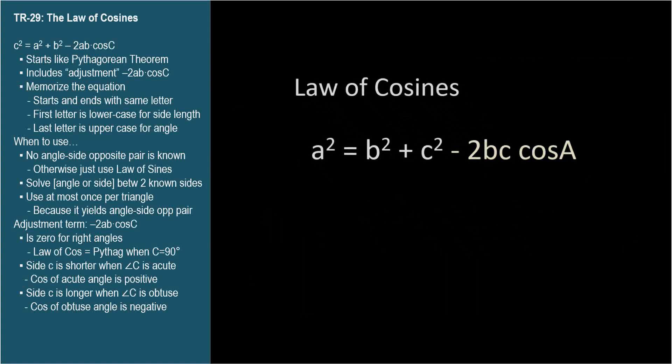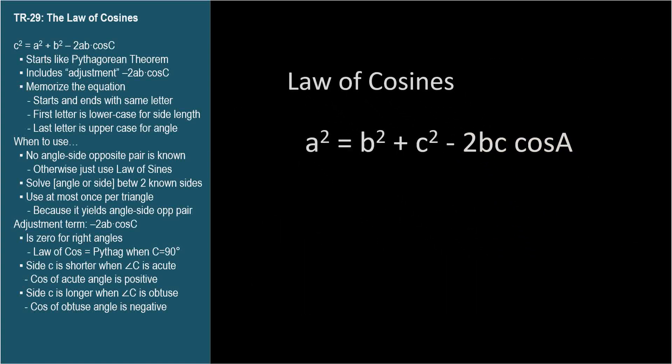It looks like impossible gibberish, but let's take a close look at a simple pattern that will help us remember it. We start with the Pythagorean Theorem. The two squared sides that we add become factors in the last term with negative 2. And finally, we multiply by the cosine of the angle opposite the isolated side, so they have the same letter.